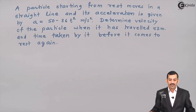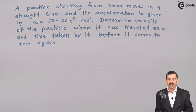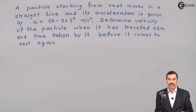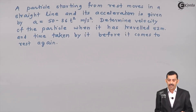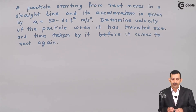We'll solve a problem on variable acceleration. A particle starting from rest moves in a straight line and its acceleration is given by a = 50 minus 36t² meters per second squared. Determine the velocity of the particle when it has traveled 52 meters, and the time taken by it before it comes to rest again.